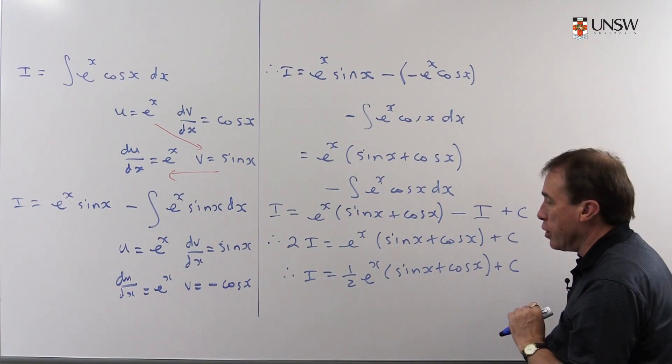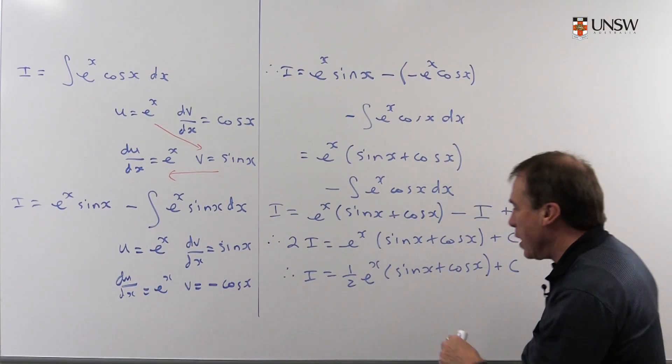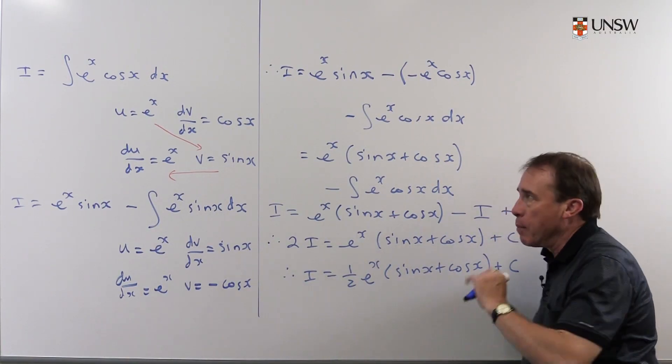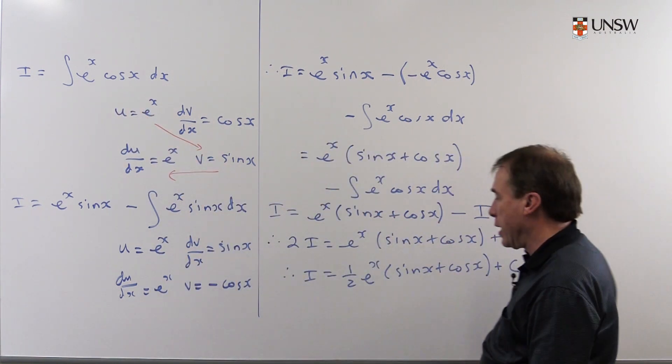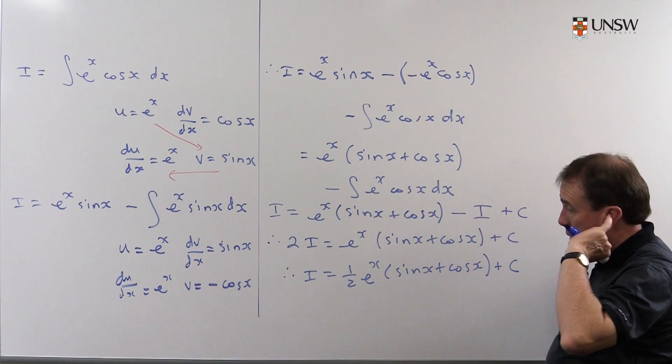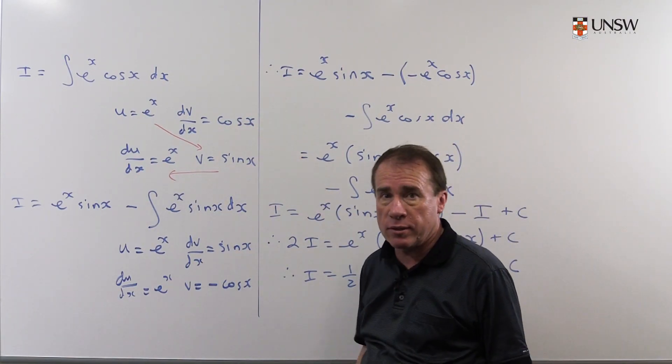By the way, of course, you can check your answer. That's also a nice exercise to do. Differentiate this. Better get you back to where you started from. So there's a nice way of checking. Take the derivative of this function, and you should get back to where you start from, e to the x cos x.